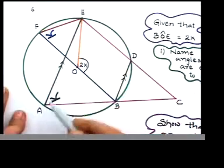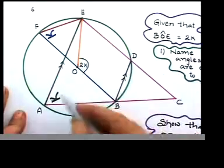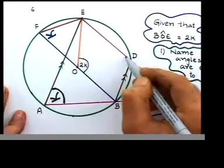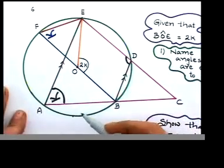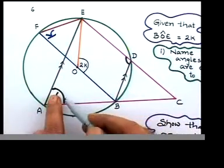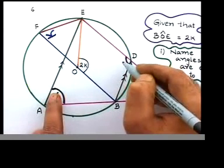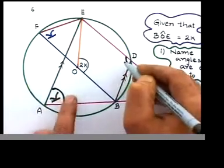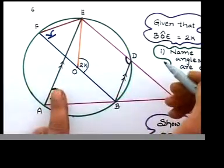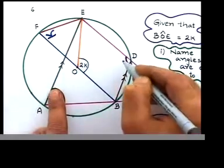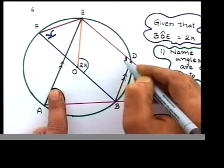That's a cyclic quadrilateral. Opposite angles add up to 180. If this is a k, what do you think of that in terms of k? Come on, in terms of k. If it's a 20, what do you think of that angle there? 180 minus 20, which will be 160.